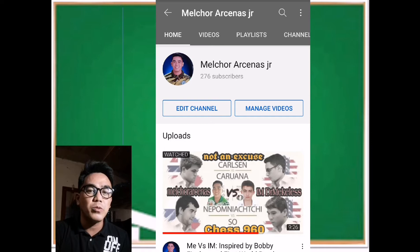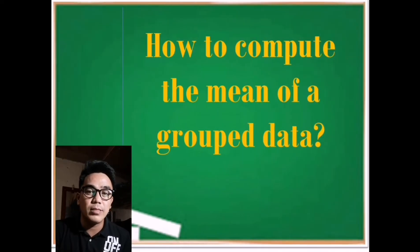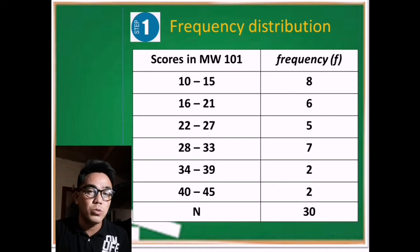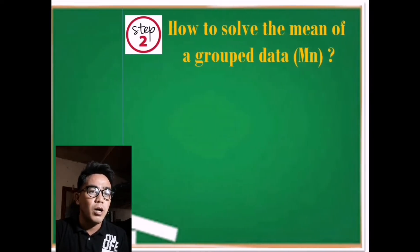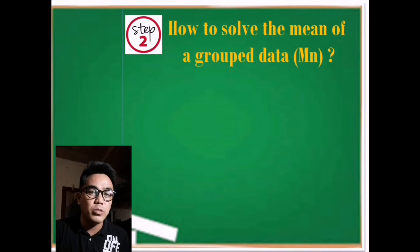Hi everyone, today we're going to learn how to compute the mean of grouped data. First, we need the frequency distribution. As you can see in our given example, there are 30 students who took the final quiz in Mathematics in the Modern World, as shown in this table. Second is how to solve the mean of grouped data, which is denoted as capital N and small n.